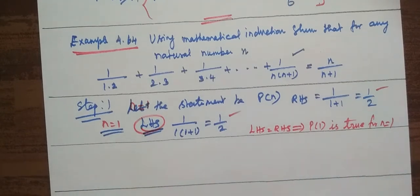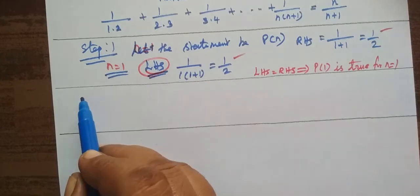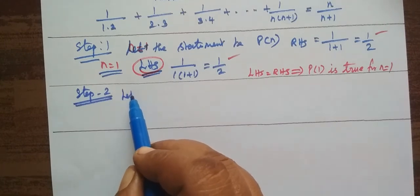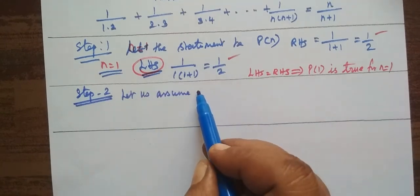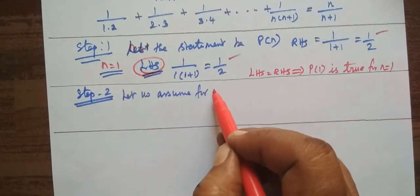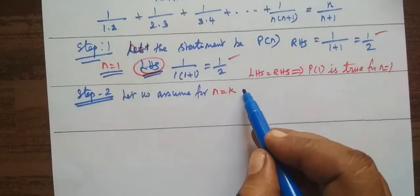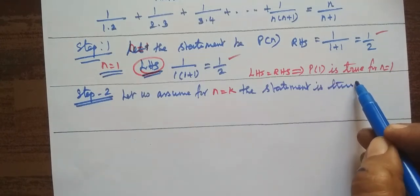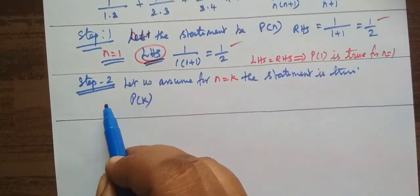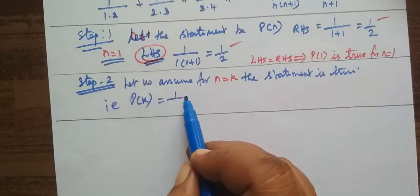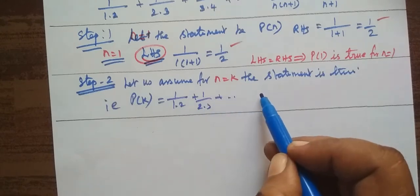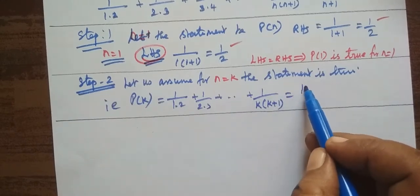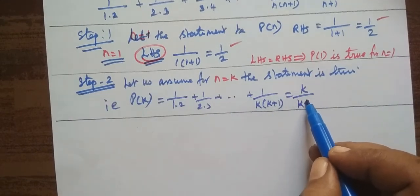P(1) is true for n equal to 1. Let us assume for n equal to k, the statement is true. So that is P(k) equal to 1 into 2. This statement is true. The second step is to prove n equal to k.